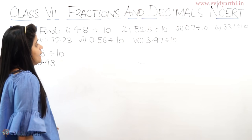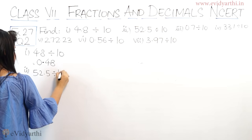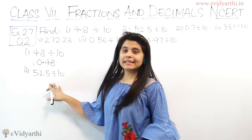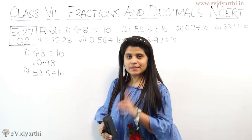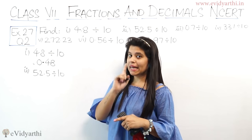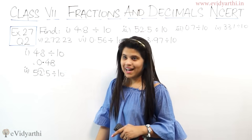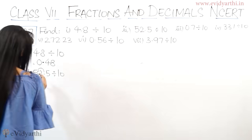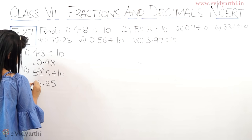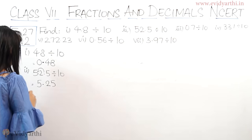Second part hai 52.5 divided by 10. Ab hamare paas hai 52.5 aur divide karna hai 10 se. 10 means 1, 0. 1, 0 means ke left hand side pe shift hoga digit. So agar yeh yahan pe hai, so yaha shift ho jayega. Yaha pe, so this will become 5.25. So yaha jayega 5.25.